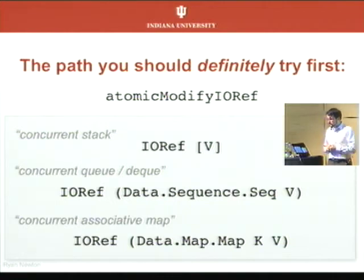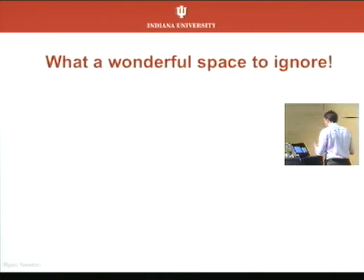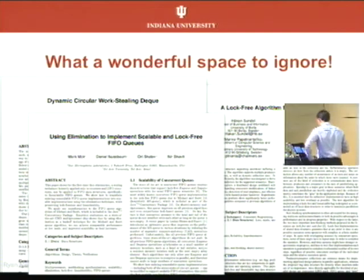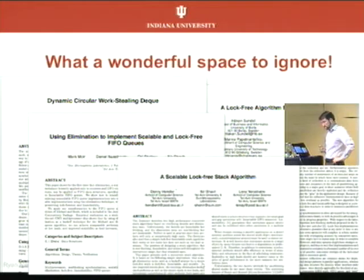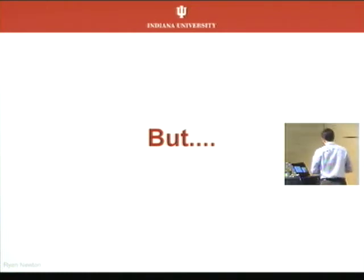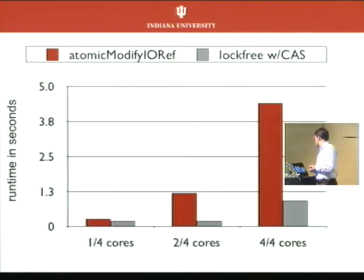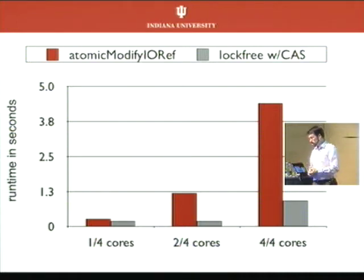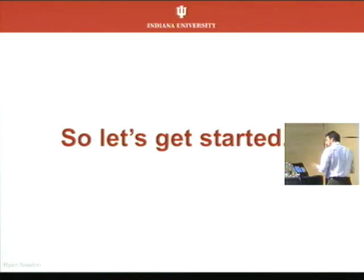If atomic-modify-IORef gave us good enough performance, then we could ignore all these headache-producing papers from conferences like SPAA where they produce an endless stream of new data structures for concurrent and scalable execution. But unfortunately I'm not a believer yet. It comes down to performance, and it's hard to believe we'll make synchronization mechanisms as efficient as the hardware-provided ones. My current benchmarks seem to indicate that's the case. Here is a simple Michael-Scott lock-free queue compared to atomic-modify-IORef on an IORef containing Data.Sequence, on a four-core single-socket Westmere machine — we're doing about 4x better on a simple contention microbenchmark. That's enough reason to think we need to implement this class of data structures for Haskell.